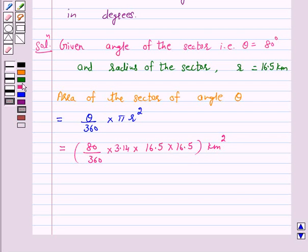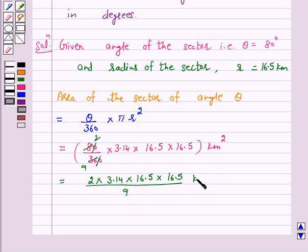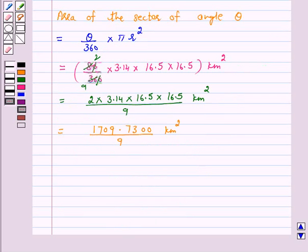And this is equal to 2 into 3.14 into 16.5 into 16.5 upon 9 kilometer square, and this is equal to 1709.7300 upon 9 kilometers square, and this is equal to 189.97 km squared.